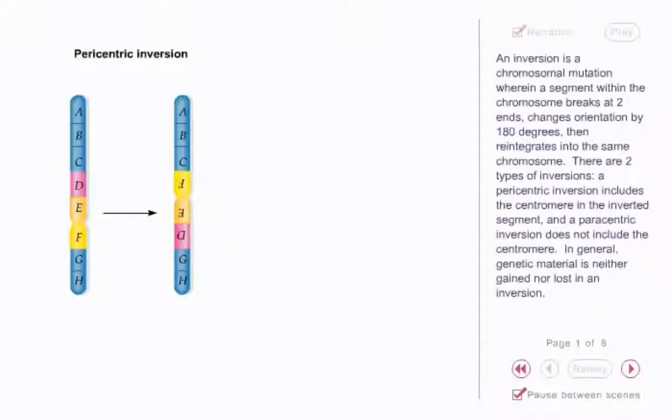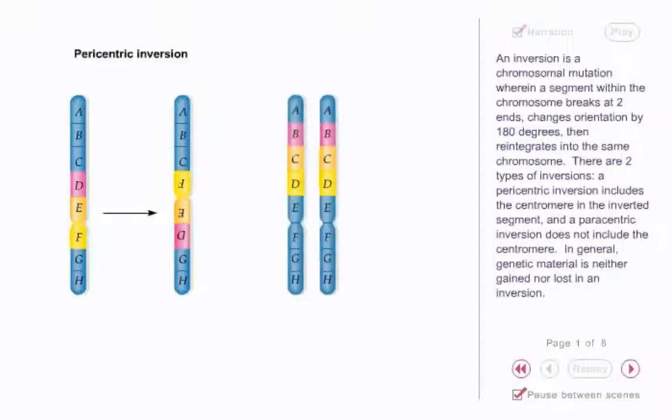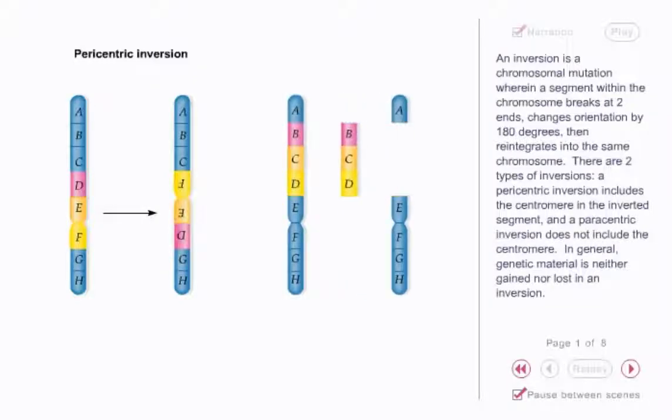A pericentric inversion includes the centromere in the inverted segment, and a paracentric inversion does not include the centromere. In general, genetic material is neither gained nor lost in an inversion.